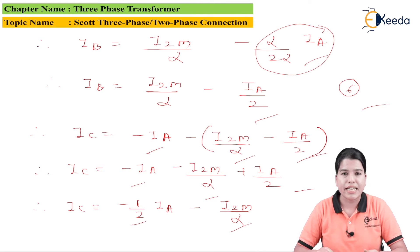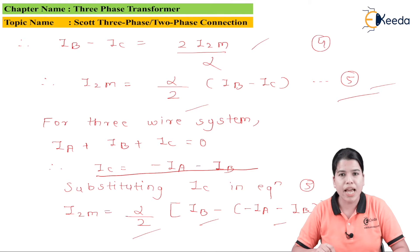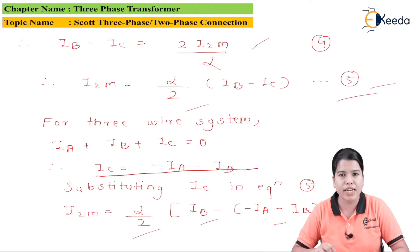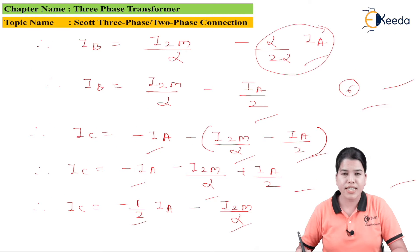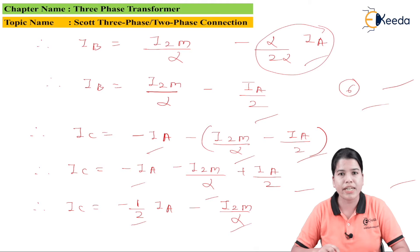In this way, we have found the equations for the currents at the secondary side of the main transformer and teaser transformer as well as at the primary side. Equations 3 and 5 give the current equations where the 3-phase supply is converted into 2-phase supply — these are equations for the secondary winding of the main and teaser transformers — whereas equations 6 and 7 give the current equations for 2-phase to 3-phase transformation. All these equations can be used for determining the value of currents.